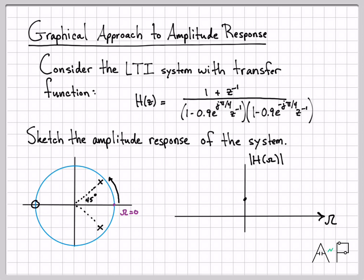As I'm walking around the unit circle, I'm increasing omega in this direction. And one thing that's happening is as I get closer and closer to this pole, the distance is getting smaller and smaller. So as I approach that point on the complex plane, which is pi over 4, this is at an angle of pi over 4 or 45 degrees.